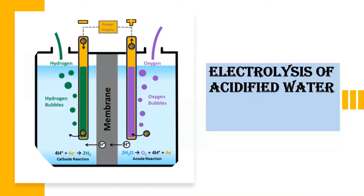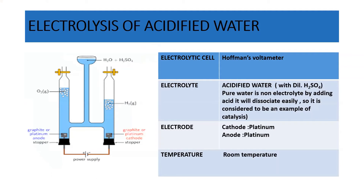Now let us move on to the second example: electrolysis of acidified water. During this process, the electrolytic cell used is called Hofmann's voltameter. The electrolyte used is acidified water. Why are we using acidified water? Because pure water is a non-electrolyte. Adding acid to it allows it to easily dissociate into ions. That is why this type of electrolysis of acidified water is considered as catalysis.